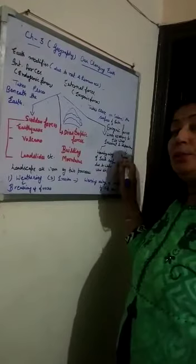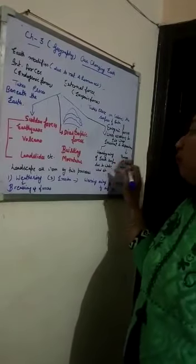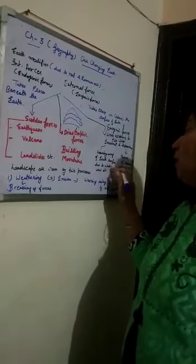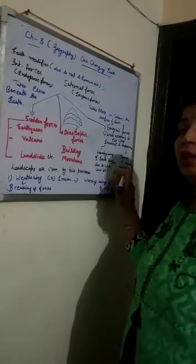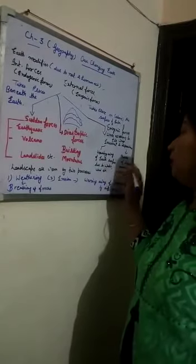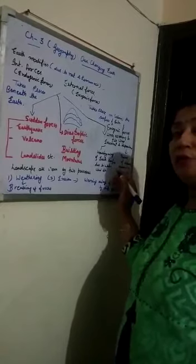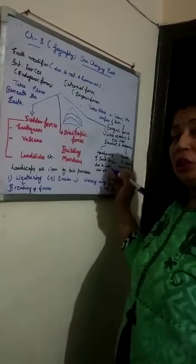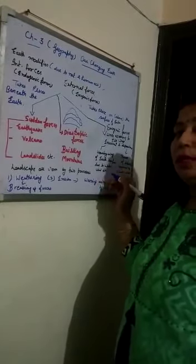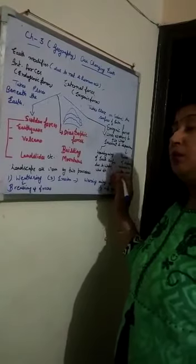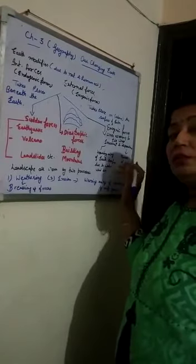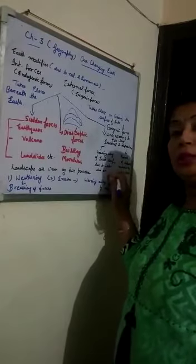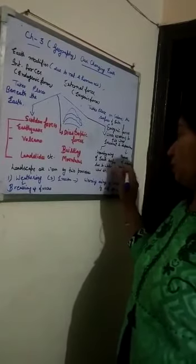Next is depositional activity. When the wearing away of the earth's surface occurs, the eroded material is carried forward by agents like water, wind, etc. and is transported to another place. This process is known as deposition.